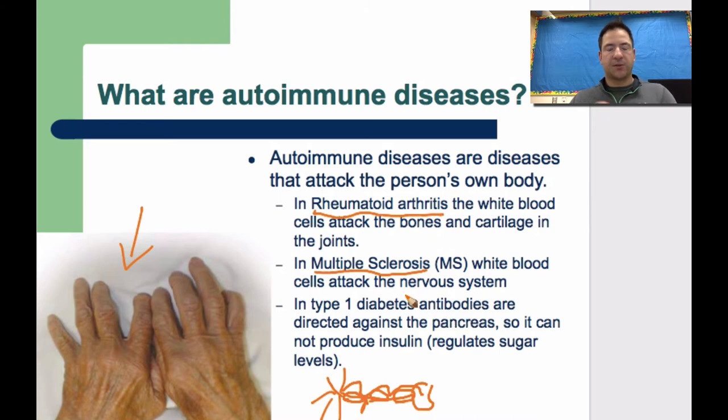And basically in multiple sclerosis, the white blood cells are attacking that myelin sheath, that coating on the outside of that axon. And when it deteriorates that, it slows signals down, makes it hard to move.